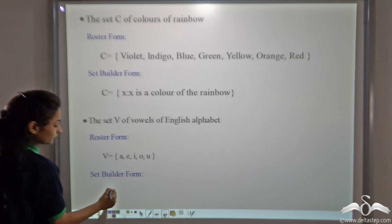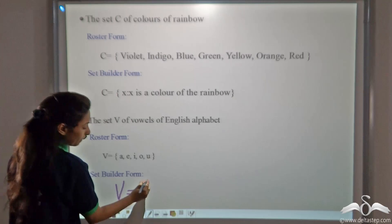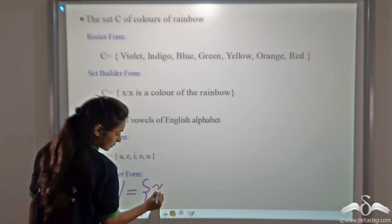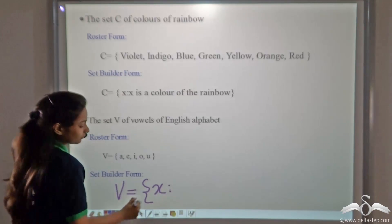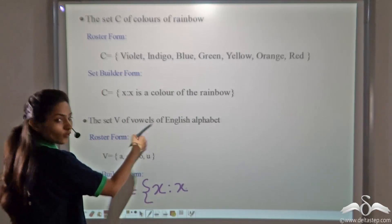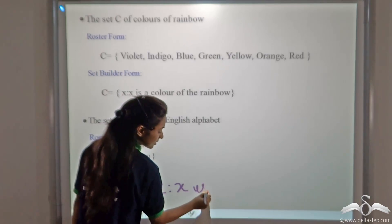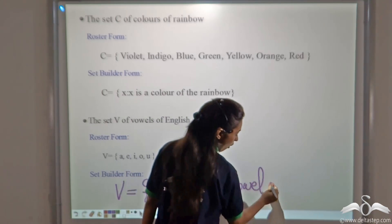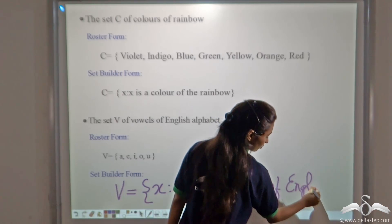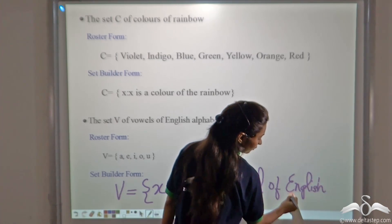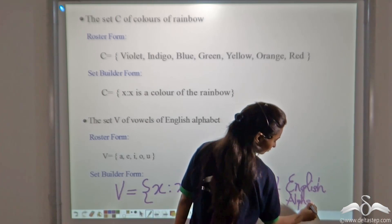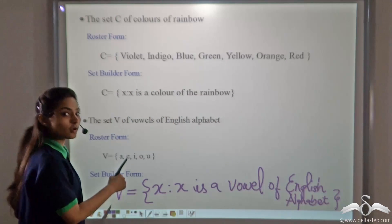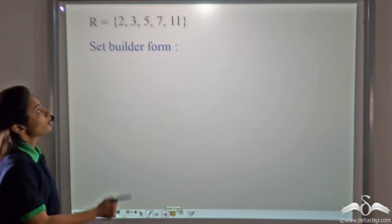Try writing it yourself. V is equal to, open curly brackets. We will write with the variable x. So x, give the colon for 'such that'. Now, what is x? x is a vowel of English alphabet. So we will write: x is a vowel of English alphabet.